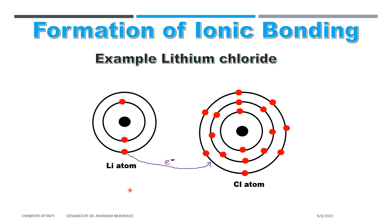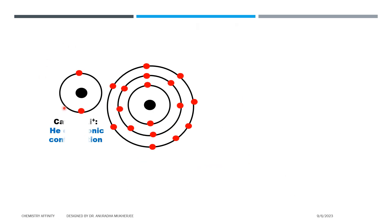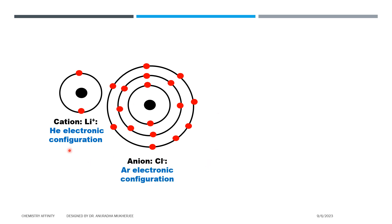Lithium can donate its one electron to chlorine atom. Here, lithium+ cation forms and Cl- anion forms. Lithium+ cation is getting helium electronic configuration and Cl- ion is getting argon electronic configuration. Both are getting noble gas configuration, which is a very stable electronic configuration.